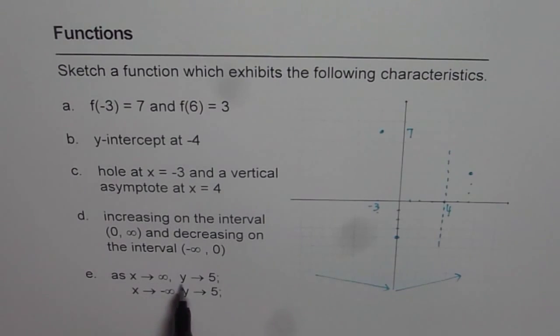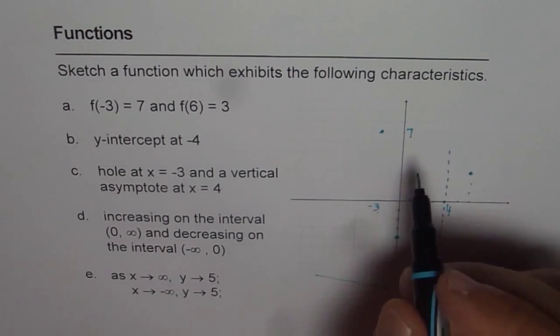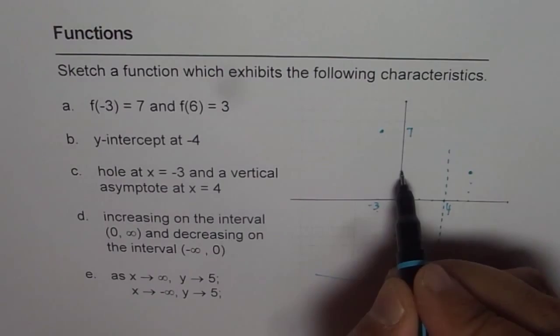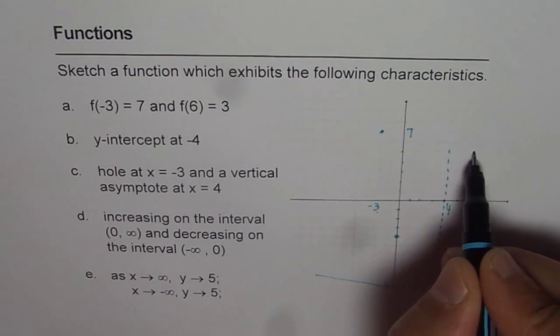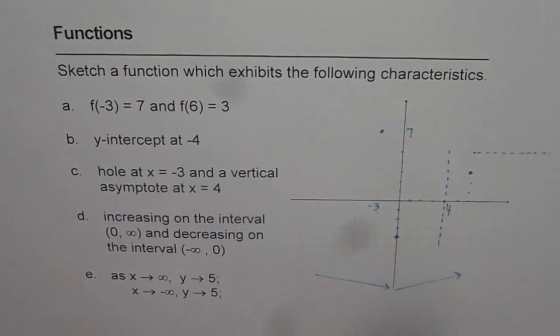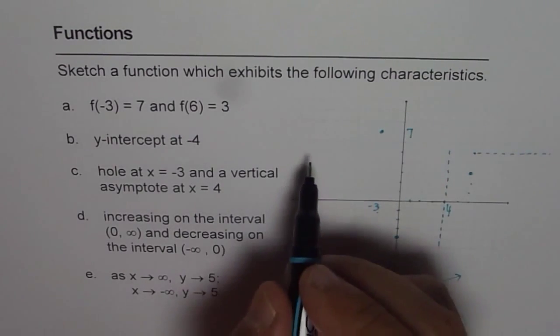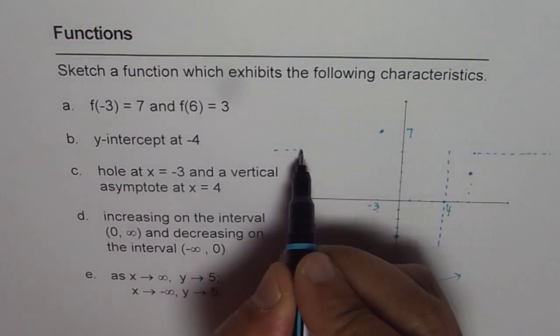And then we have, as x approaches infinity, y approaches 5. So that means 1, 2, 3, 4, 5. So that is our horizontal asymptote. As x approaches -infinity, y approaches 5. So we have horizontal asymptote on both the sides.